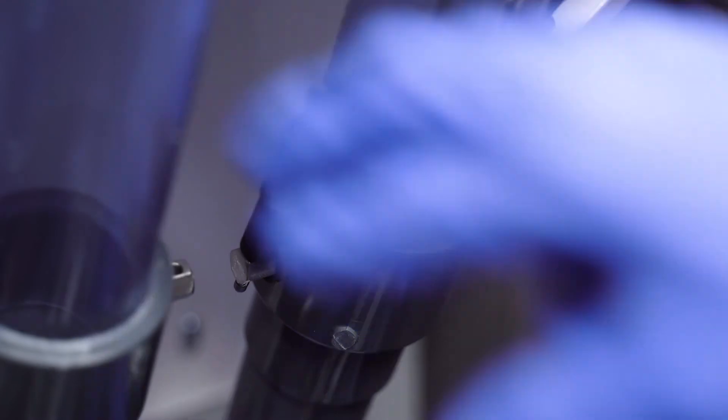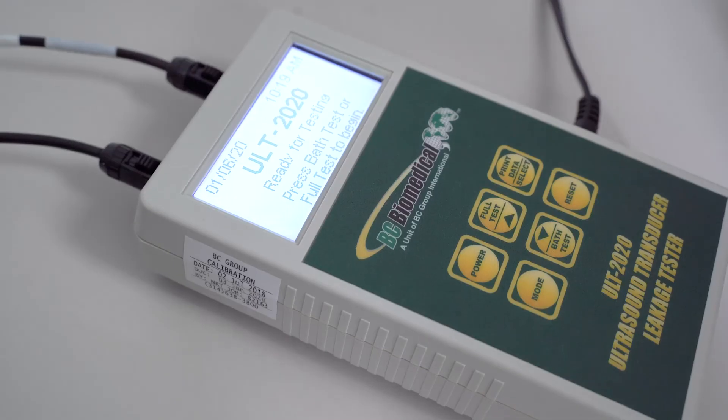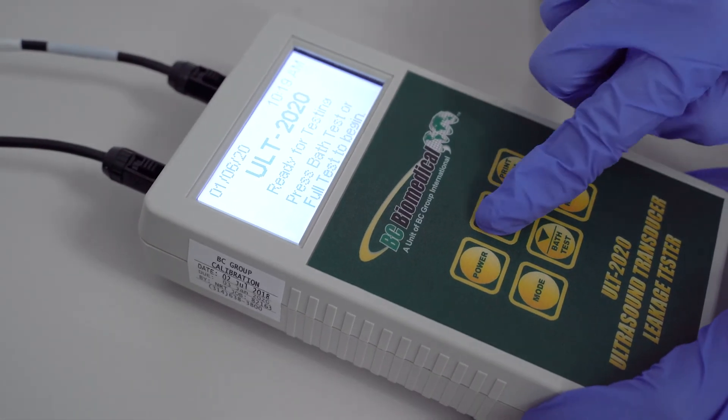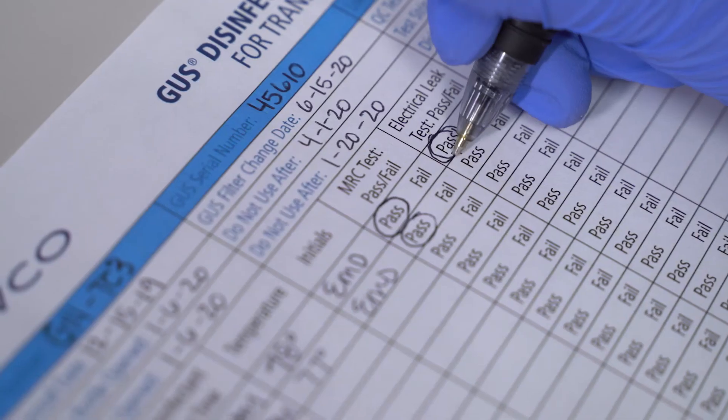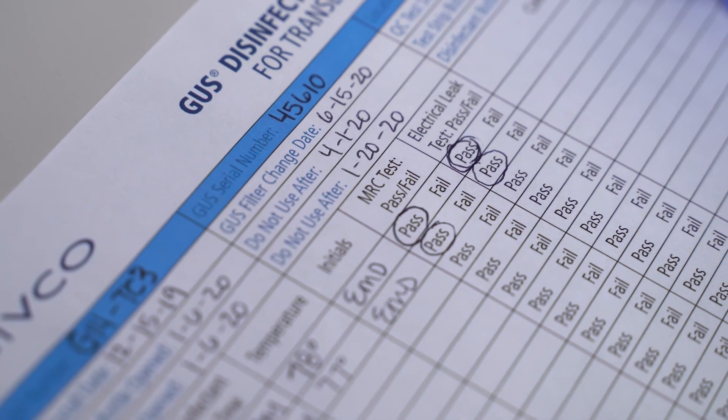Attach conductivity probes to the electrodes on the GUS tube. Simultaneously check the solution for conductivity and perform the leakage test by pressing the full test button. Finally, document the results.